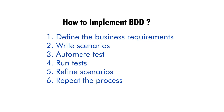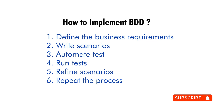Each scenario should describe a specific behavior of the system and include a set of inputs and expected outputs. Automate the tests — use BDD testing frameworks such as Cucumber or Behave to automate the scenarios. This involves writing code that maps the scenario steps to actual code that implements the desired behavior of the system. Run the tests — run the automated tests to ensure that the system behaves as expected, and use the test results to identify defects and issues that need to be addressed.